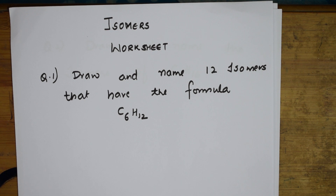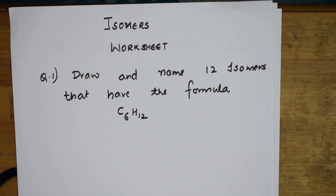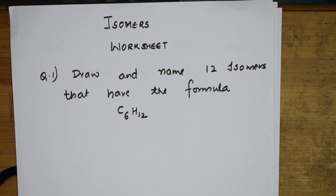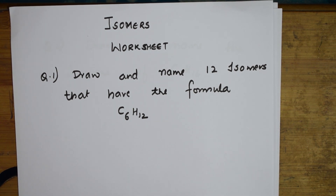Question 6 — this is a quite common question in your CVSE. Draw and name 12 isomers that have the formula C6H12. They've asked me to draw 12 isomers, very interesting. The formula is C6H12.